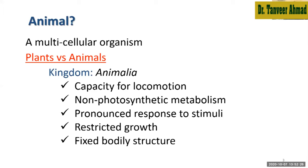The third characteristic is pronounced response to external stimuli. External stimuli means when you touch an unknown animal not familiar with you, you get a very pronounced response, for example, a back leg kick. In the case of plants, such a response is present but is not very pronounced. When you touch a plant, it tries to roll back its leaves, but they don't have a very pronounced response like animals.